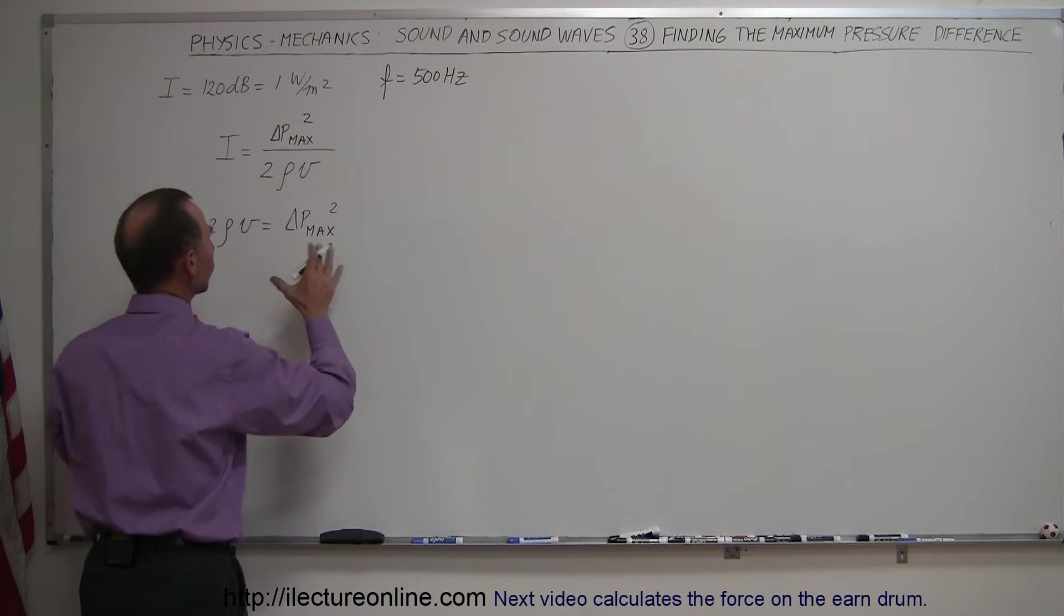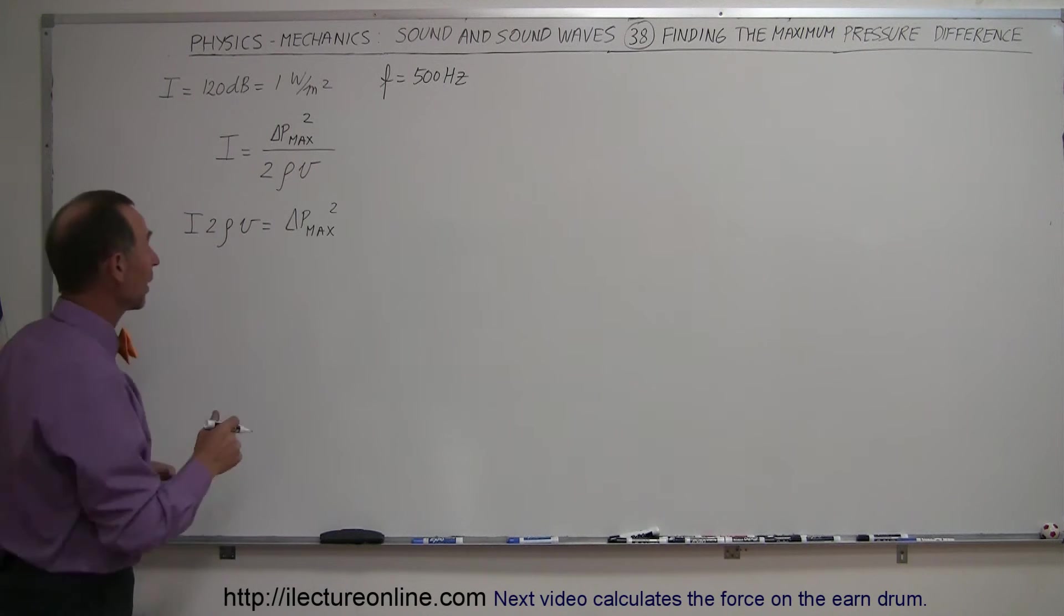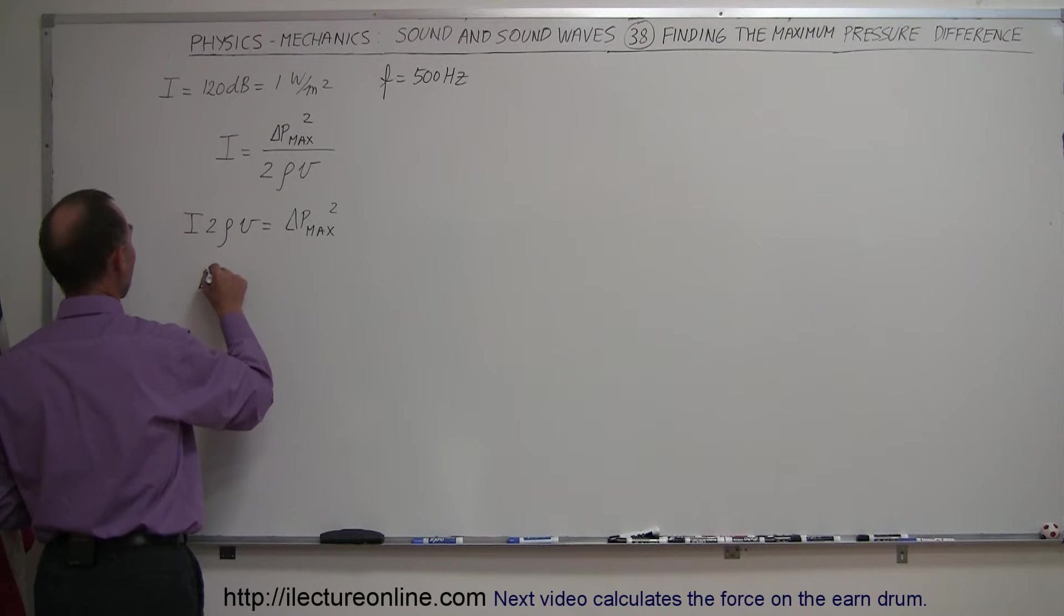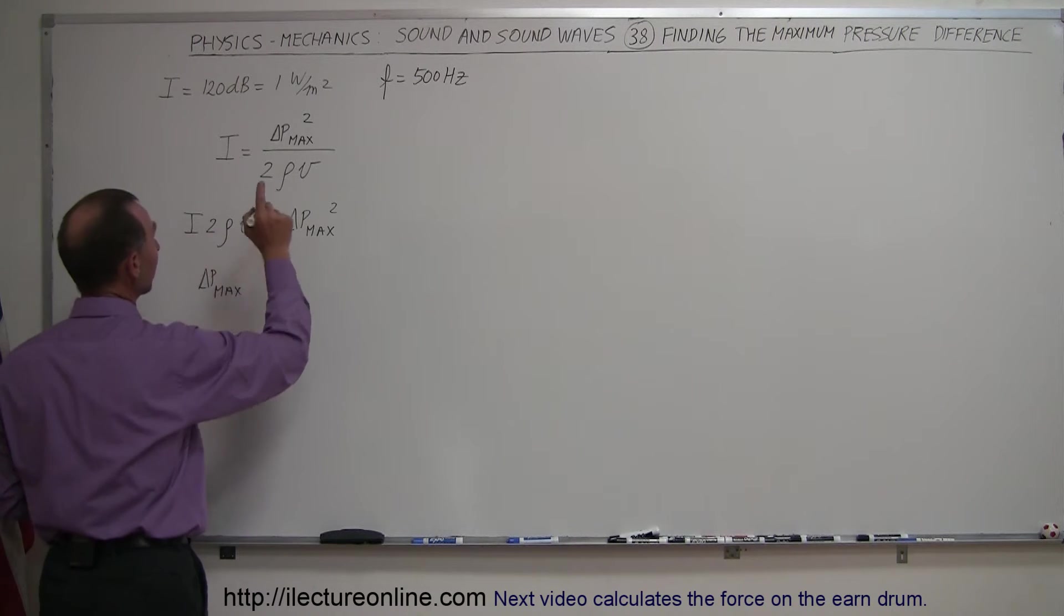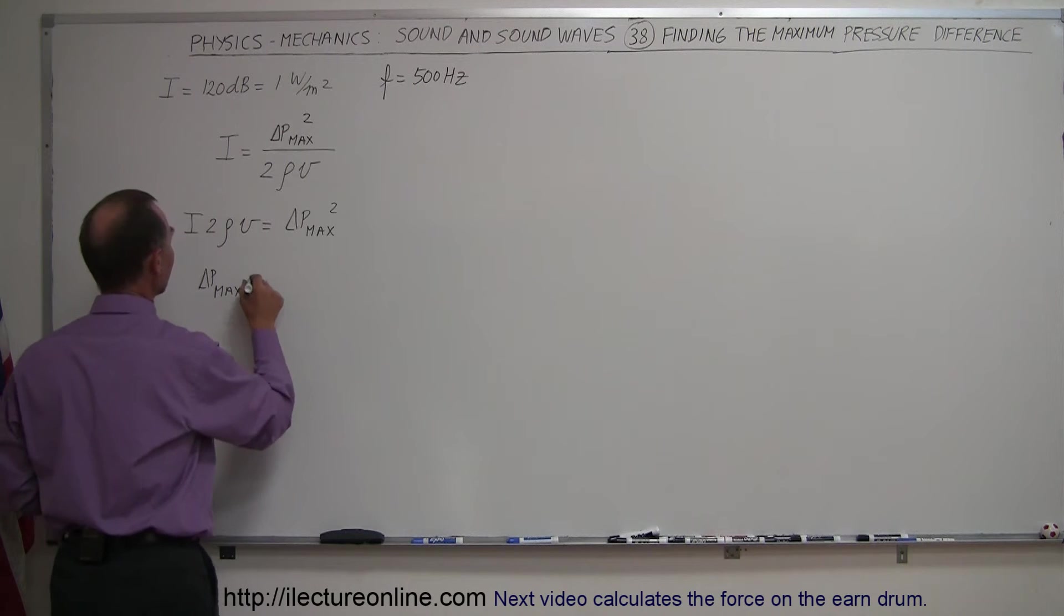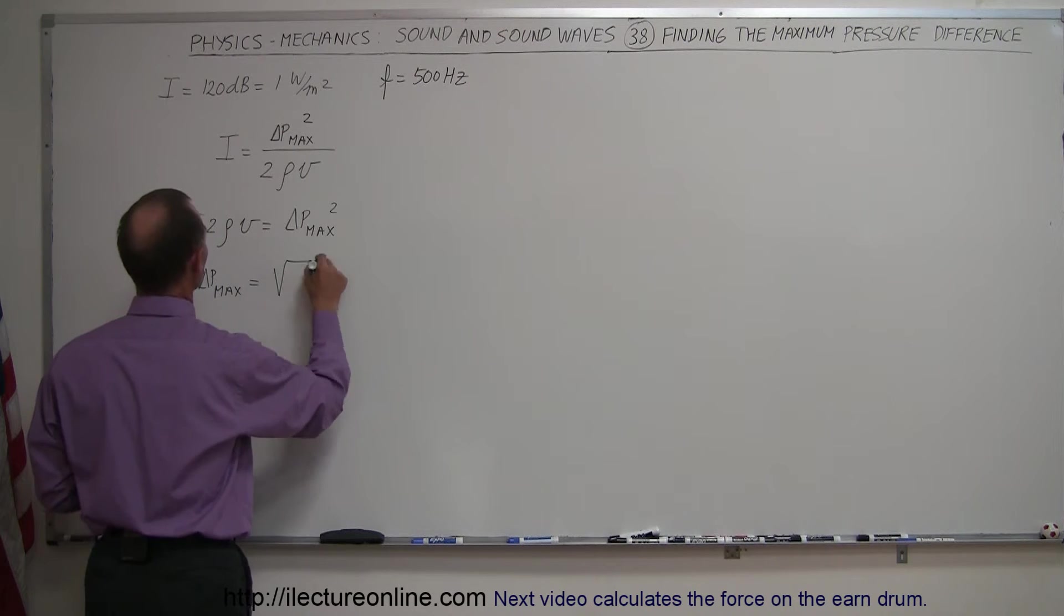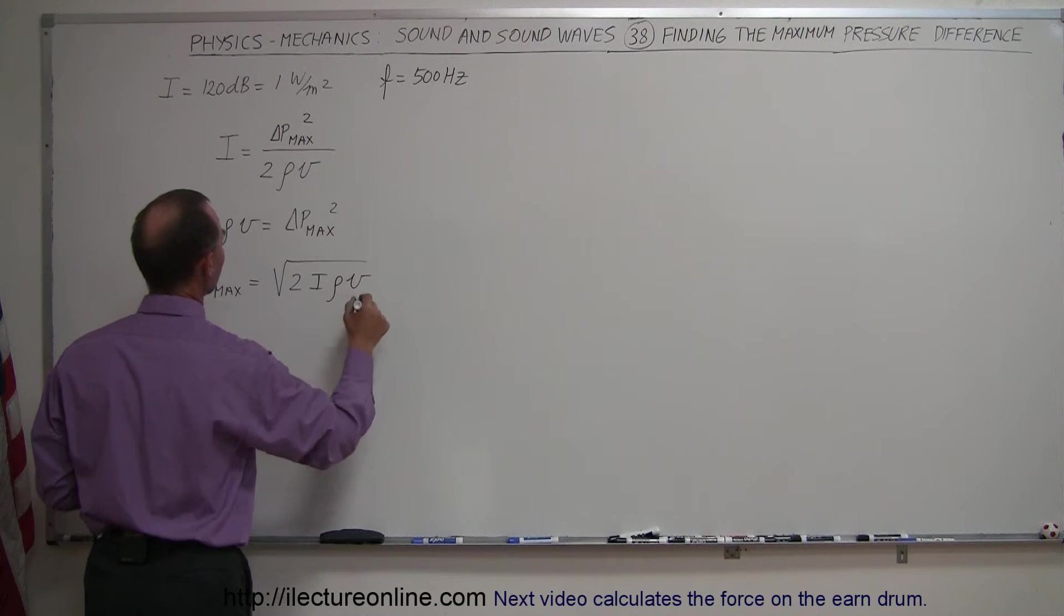Then we take the square root of both sides and turn the equation around, which means the maximum pressure difference in a sound wave of 120 decibels at 500 hertz equals the square root of twice the intensity times the density times velocity.